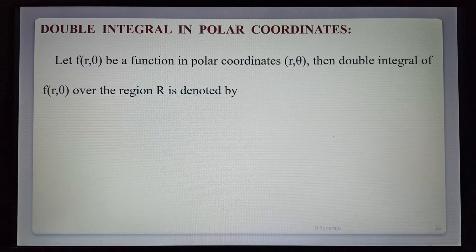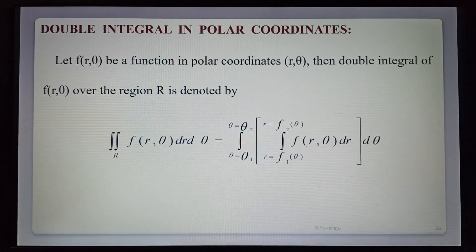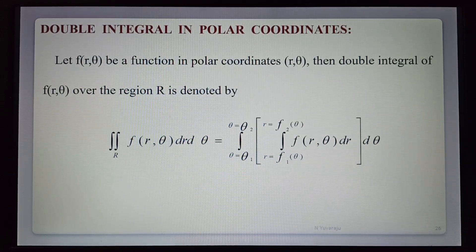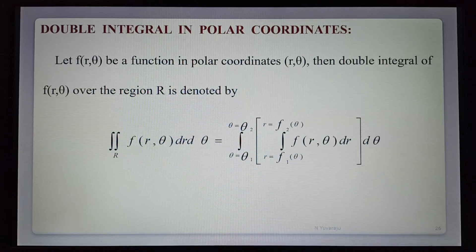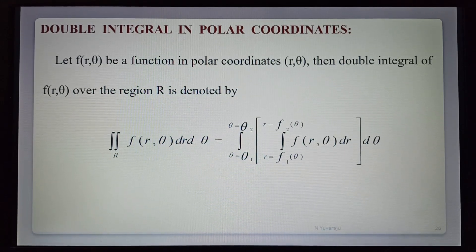The definition is: let f(r, θ) be a function in polar coordinates. Then the double integral of f(r, θ) over the region R is denoted by the iterated integral from θ₁ to θ₂ and from f₁(θ) to f₂(θ) of f(r, θ) dr dθ. The theta limits are always constants because theta is an angle, and the r limits are functions of theta or constants.